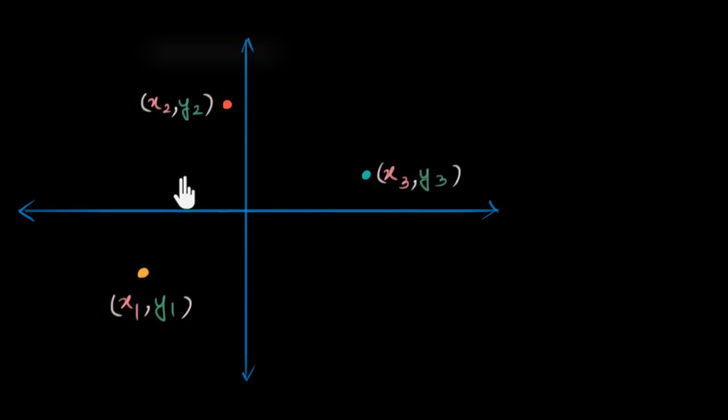If I give you three points like this and if I ask you can you find the area of the triangle you'll get if you connect these three points, how do you think about this?